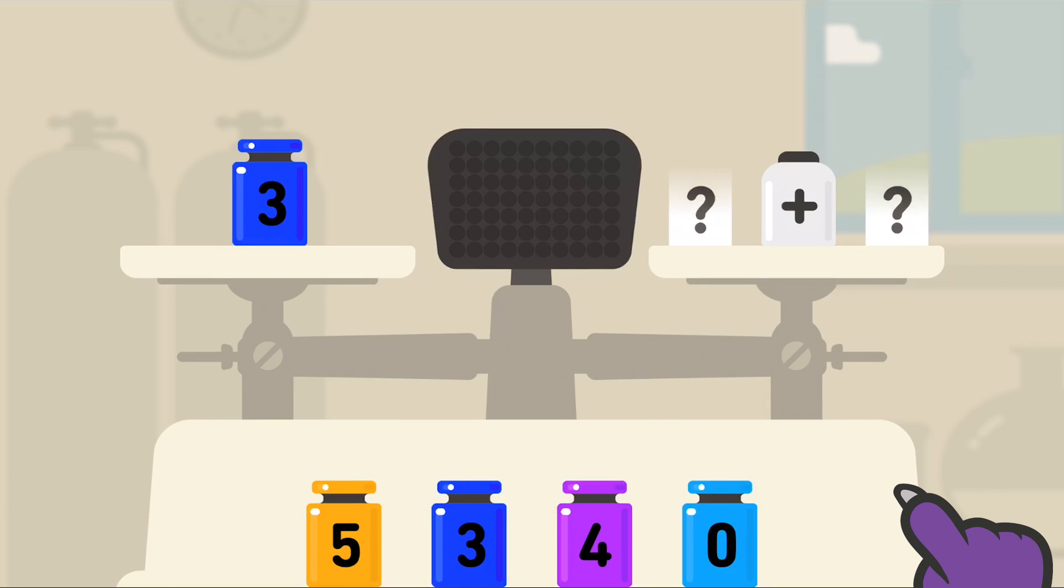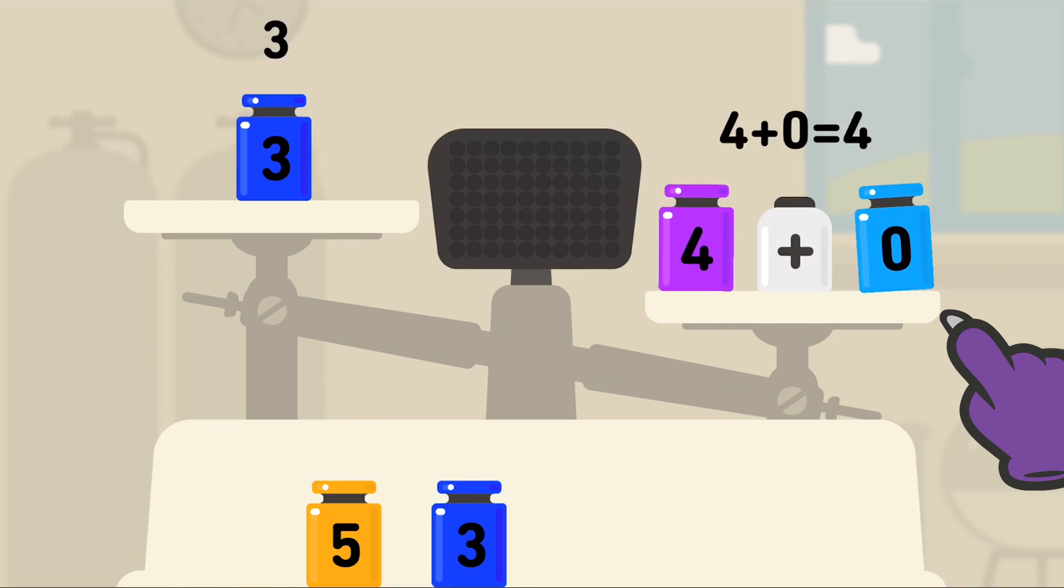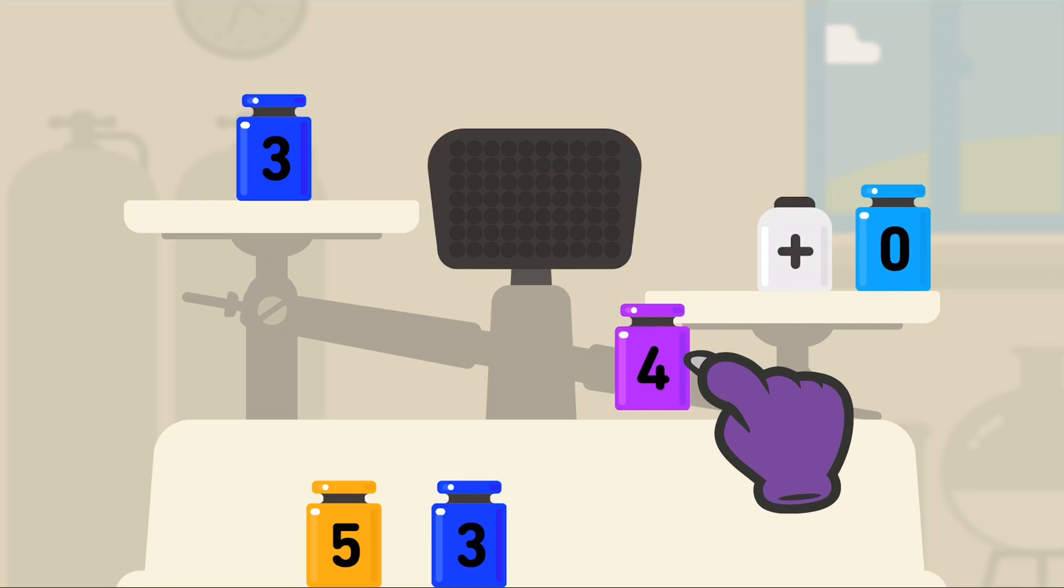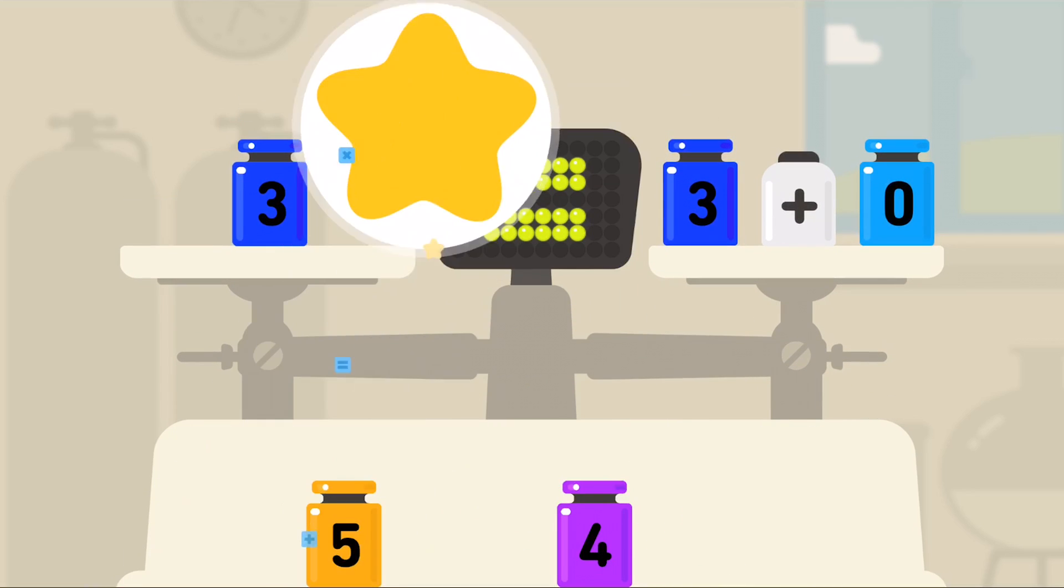Hmm, another three. Let's see, let's try this four and this zero. Oh wait, four plus zero equals four, not three. Let's get rid of the four and try that three. Three plus zero equals three. Perfect!